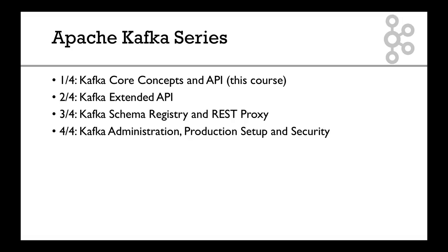In the end there's a lot to learn about Kafka, but you may not need to learn all of it. That's why this content is divided into four different sub-courses on Udemy. The first covers Kafka core concepts and API, the most important to get started. The second covers Kafka Connect and Kafka Streams — the Extended API. The third is about the schema registry and REST proxy. The fourth covers Kafka administration — how to set it up in production and configure security. The goal is to make sure you get exactly what you need and that each course is manageable on its own.